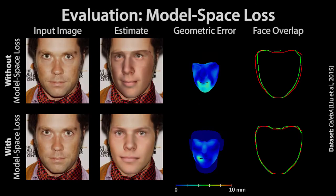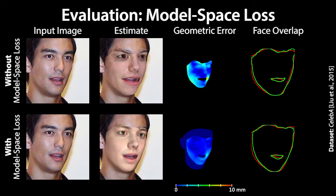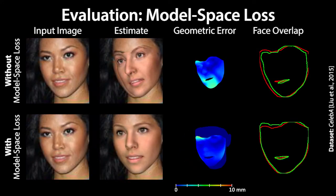In the following, we evaluate the technical contributions of our approach. We first evaluate our model space loss function, which leads to higher quality reconstruction results — seen at the bottom — in terms of model colors, geometry, and phase overlap. Please see our paper for a quantitative evaluation on almost 6000 real images.